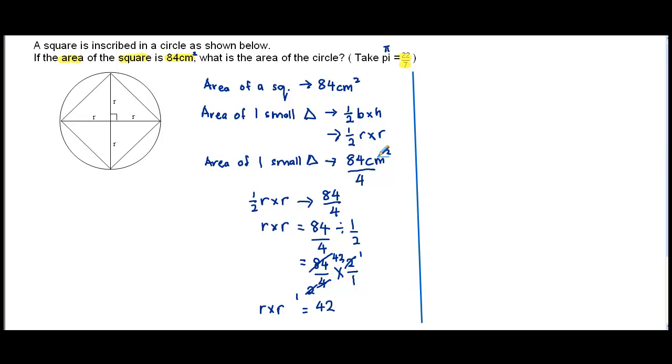What is the area of the circle? We know that the formula for area of a circle is pi R squared. So this would be area of circle, which is pi R squared. That means 22 over 7 times we have found that R squared, which is R times R, to be 42.